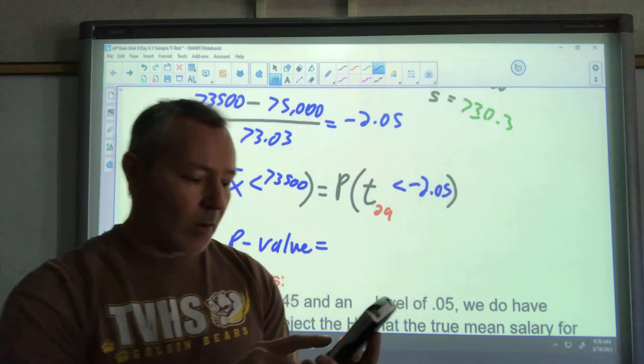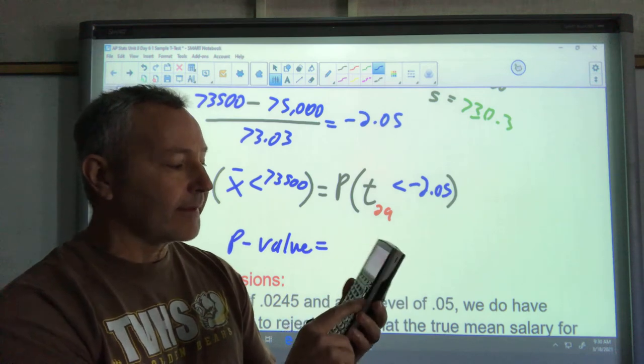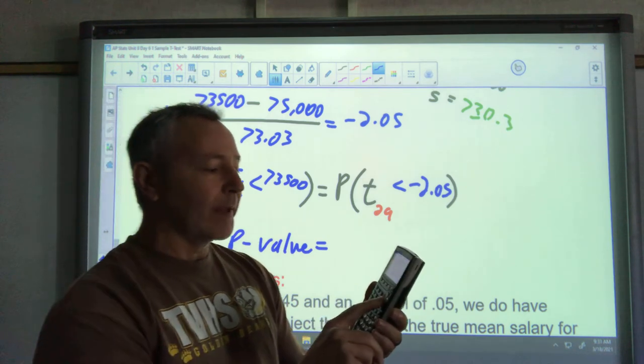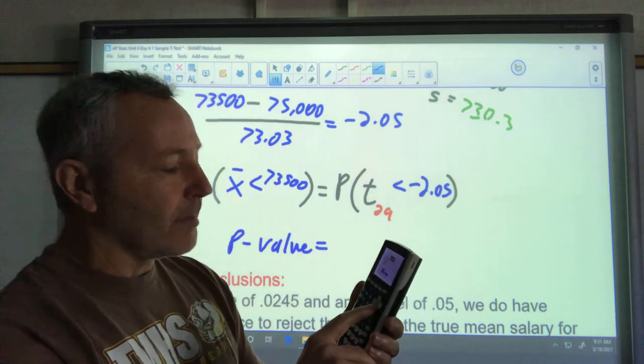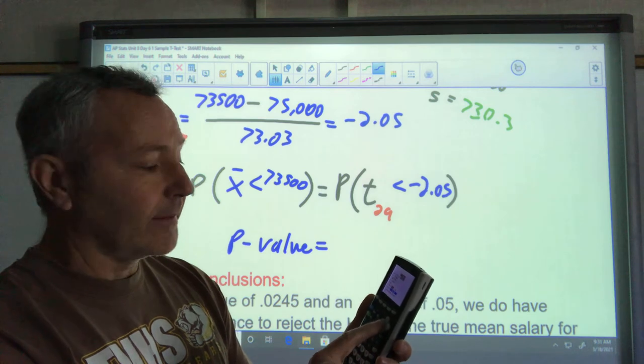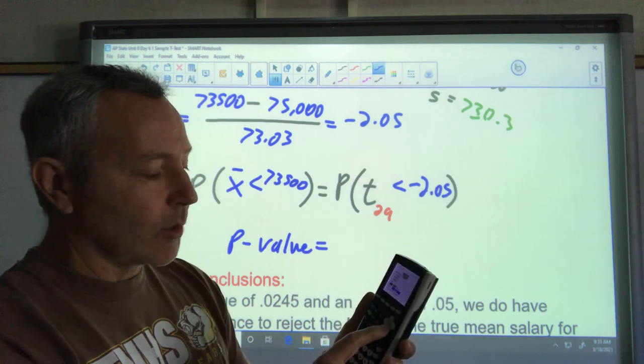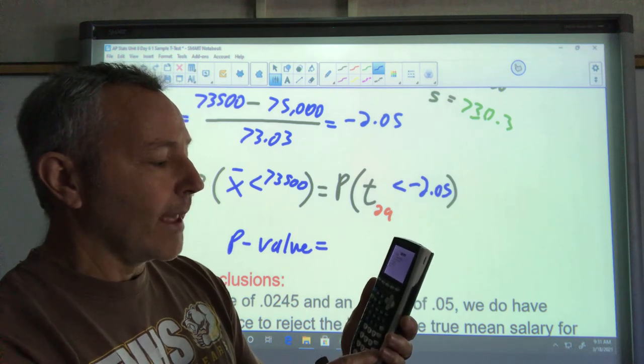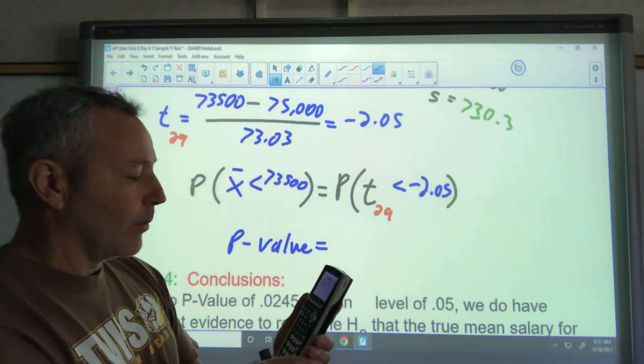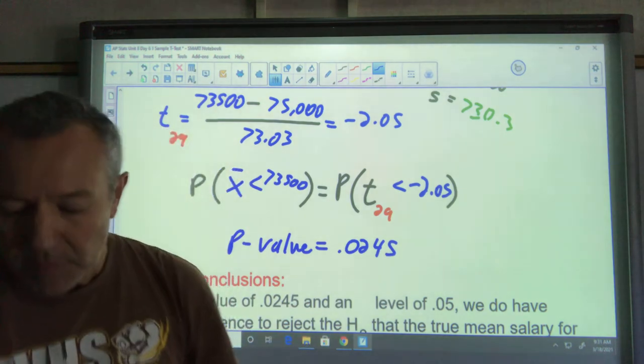I'm going to go to my StatKey, slide over to tests, and I'm going to go to number two, a t test, that's a one sample t test. We're inputting statistics. Our mean of our null is 75,000. Next entry is x bar, that's our sample mean, 73,500. S of x is the standard deviation of our sample, 4,000. N is 30, and then I want my hypothesis to be less than, which is the central choice. Go down and calculate on that. The t is negative 2.05, which is what we calculated, and our p value is 0.0245.